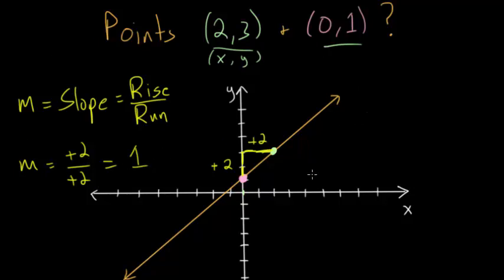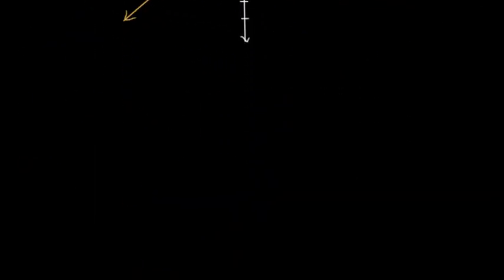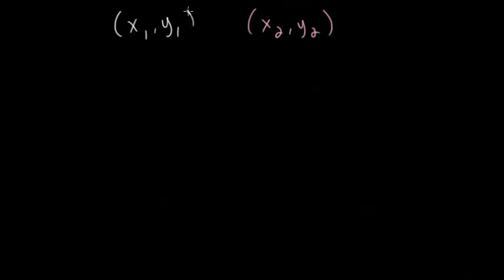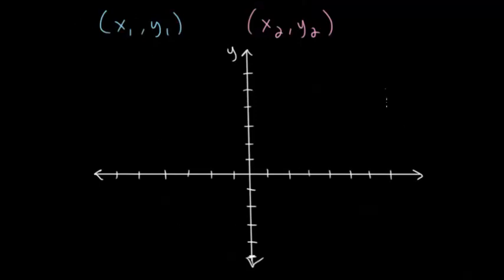Now that we've seen a specific example of how to find the slope between two points connected by a line, let's think about this more generally and see if we can come up with a formula. If you give me any pair of points (x1, y1) and (x2, y2), I can always find the slope between those two points without having to draw a picture every time. So let's consider the points (x1, y1) and (x2, y2) and plot them on a coordinate plane.